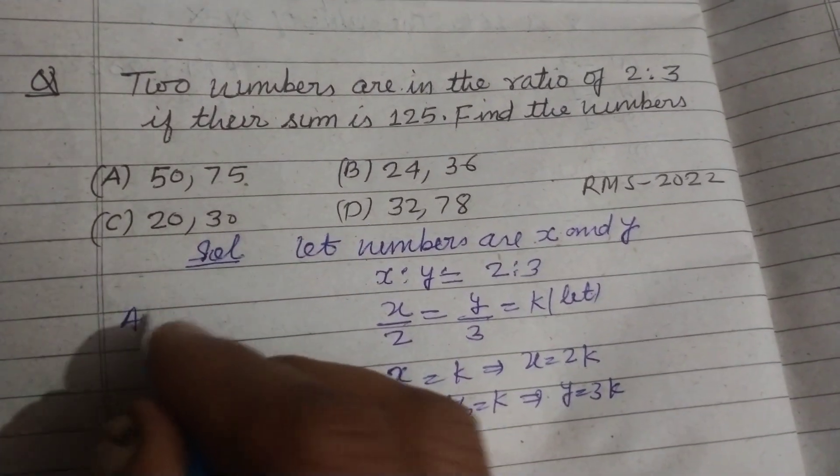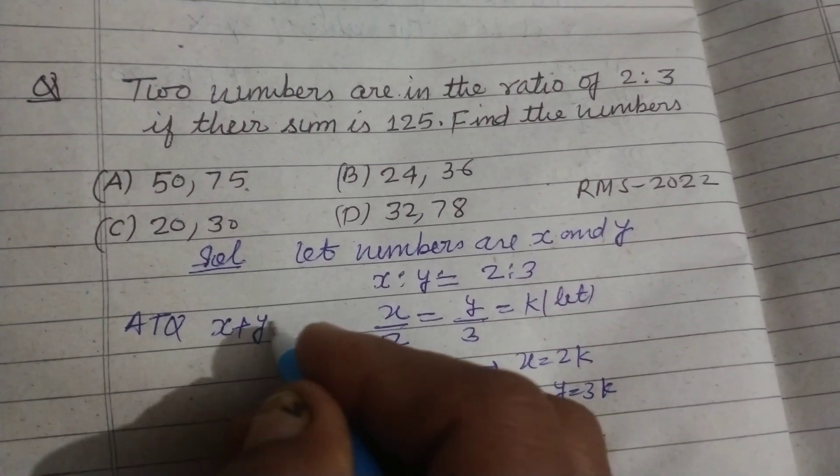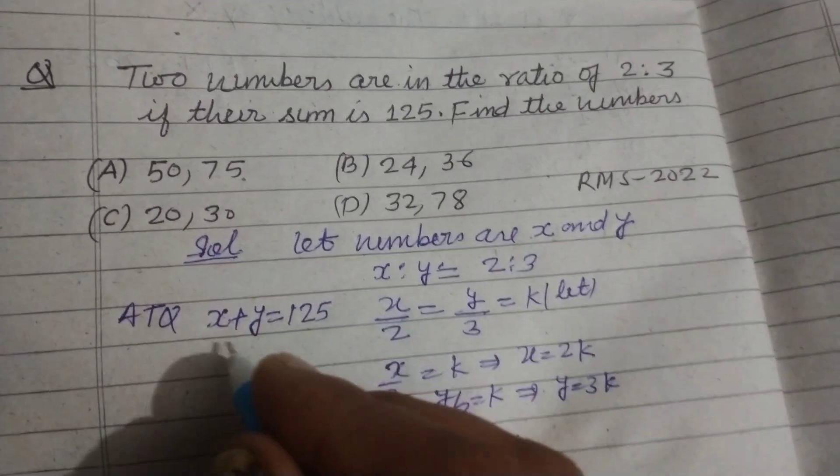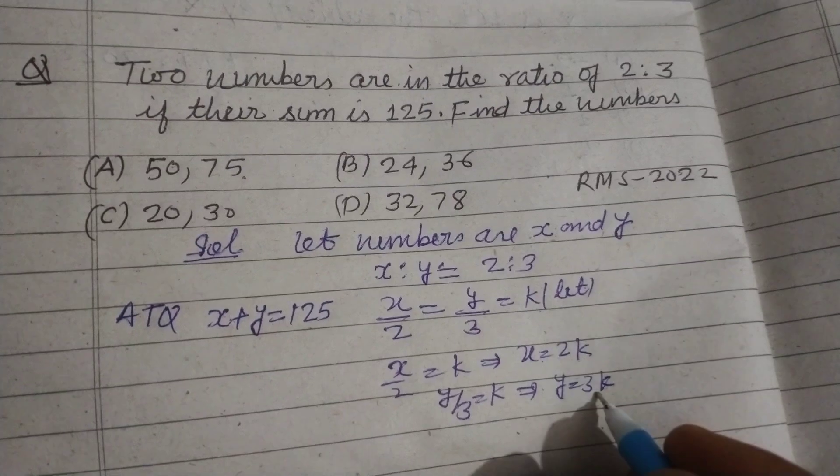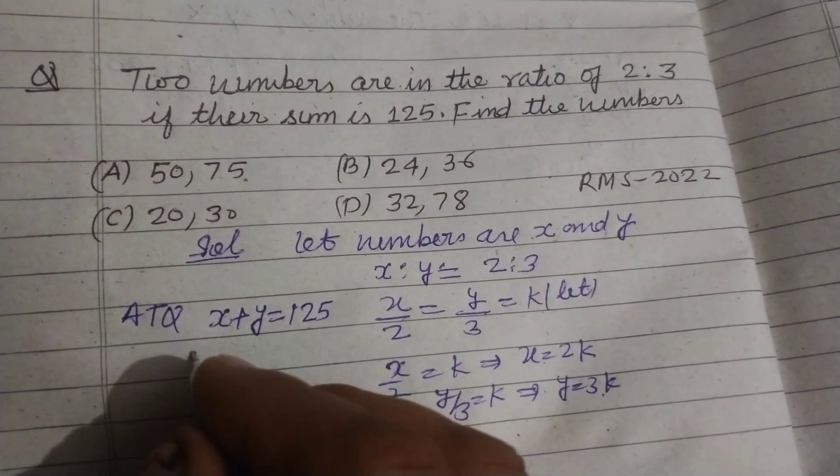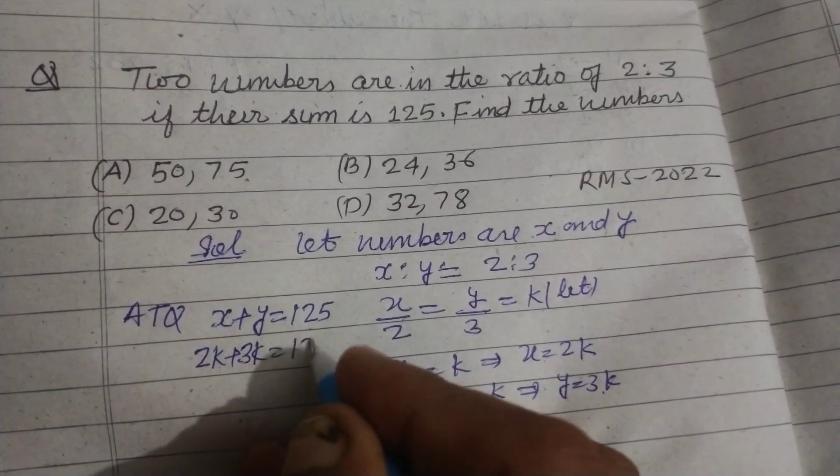Now according to the question (ATQ), it is given that the sum of the numbers is 125. So x + y = 125. We put x = 2k and y = 3k in this equation, so 2k + 3k = 125.